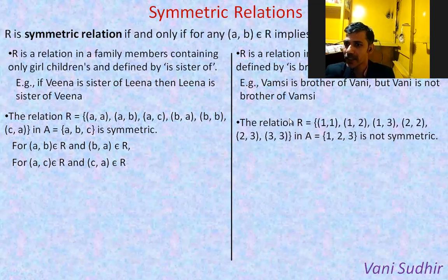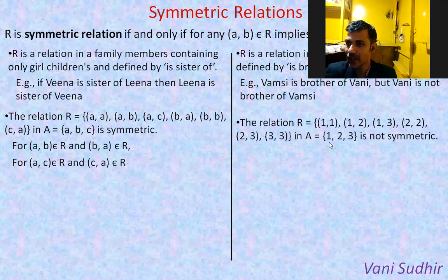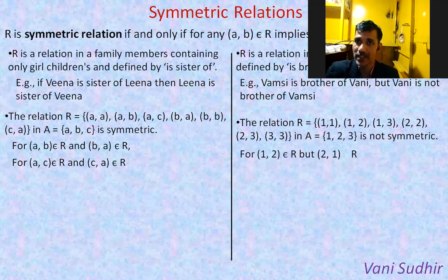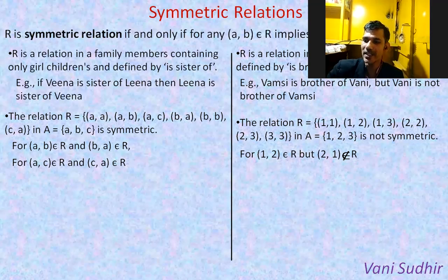Here some ordered pairs are given. Observe how the X and Y coordinates are related — X coordinate is less than Y coordinate, so this is the 'less than' relation. This R defined on A is not symmetric, because if (1, 2) is in the relation, then (2, 1) is not there. If A is related to B, B should be related to A — then only it is symmetric.